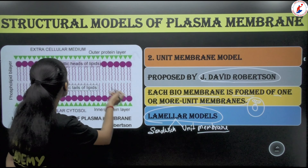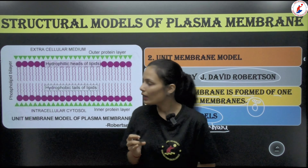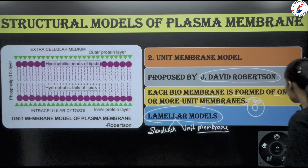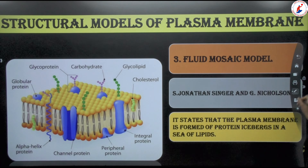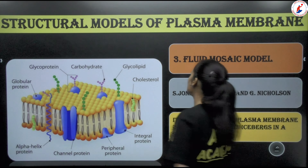In lamellar models, the arrangement is: outer protein layer, then hydrophilic ends and hydrophobic tails of the phospholipid bilayer, then inner protein layer. The third and most widely accepted model is the fluid mosaic model, proposed by S. Jonathan Singer and Nicolson.